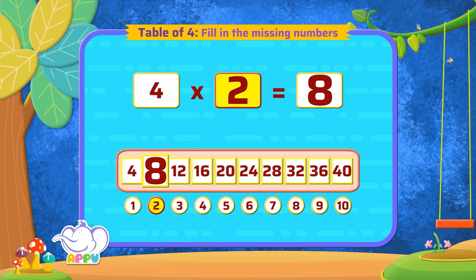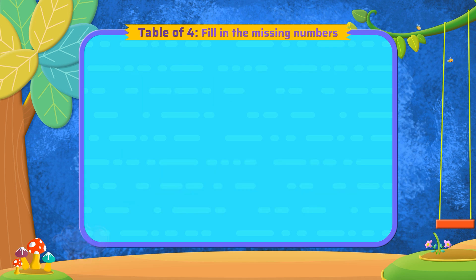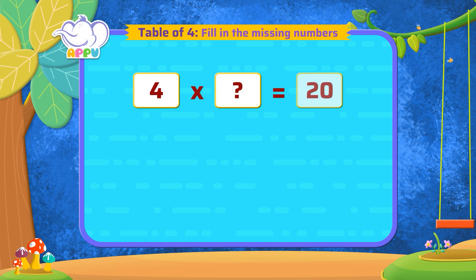Sensational! 4 multiplied by a number is 20. What is the missing number?